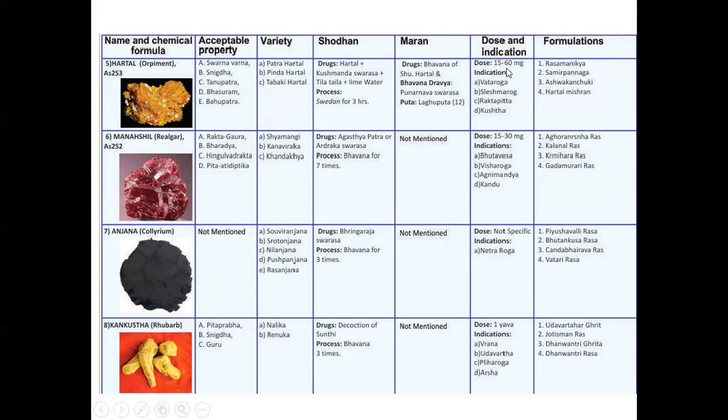Dose is very less, 15 to 60 mg. Indications, Vata Roge that is Srotoro Dhajanya Vata Prakop, then Shleshma Roge, Kapha Vikar. Kapha Vata Vikar diseases can be cured by Hartal and Maneshivu. Then Rakta pitta, but again this is a Samurakta pitta, not the Nirama one. Kushta, skin diseases with secretions, that is whipping eczema. And formulations are Samanikya, Samirpannagaras, then Ashwakanchuki is a very good purgative. And Hartal mischirana for the skin diseases is available prepared from the Hartal.